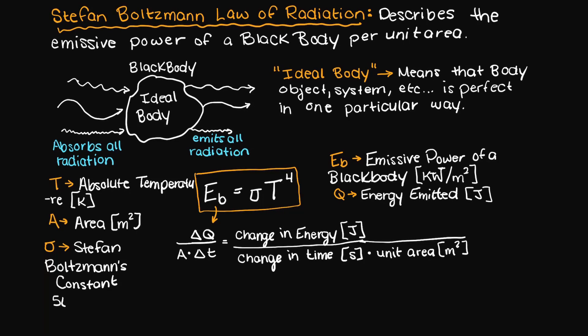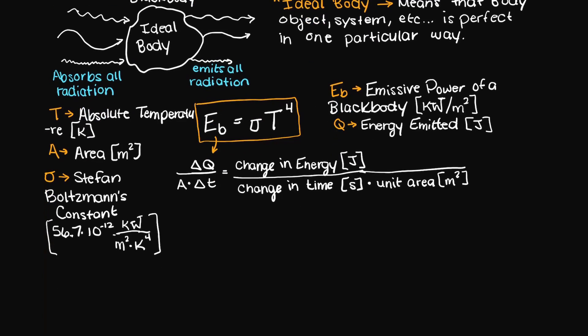Last thing to note is that the Stefan Boltzmann's constant is equal to 5.67 times 10 to the power of negative 12 with these units here. And as you can see here by the way the units work out, it does indeed give us an amount of power over an area.